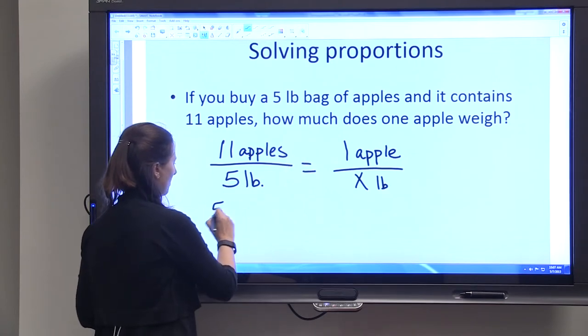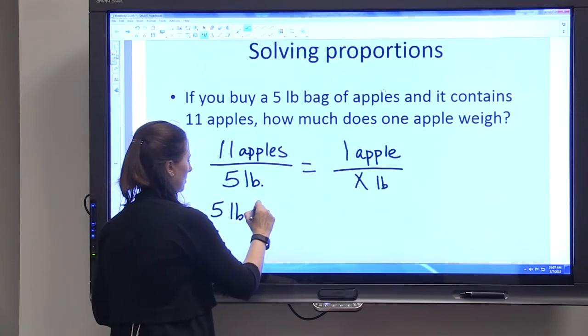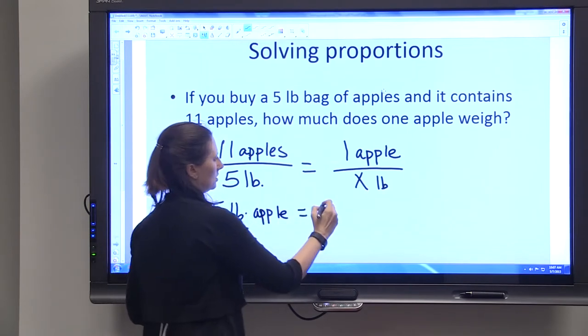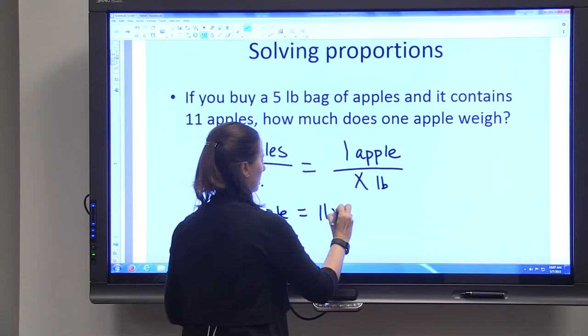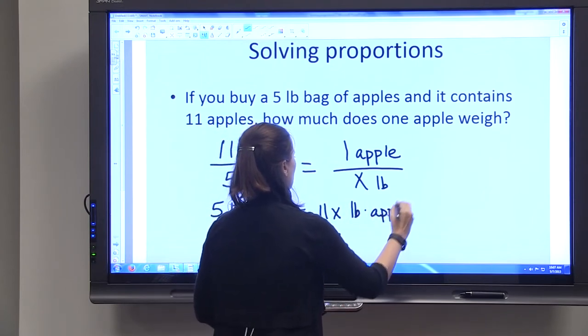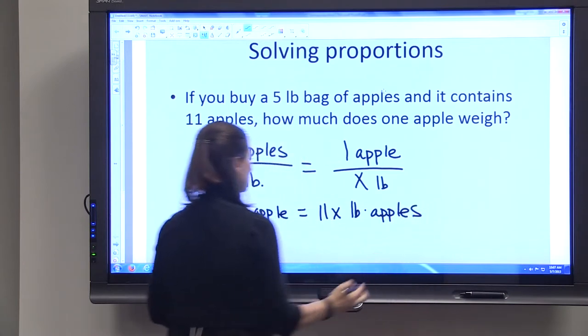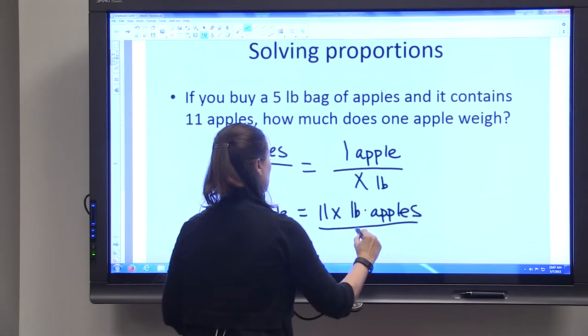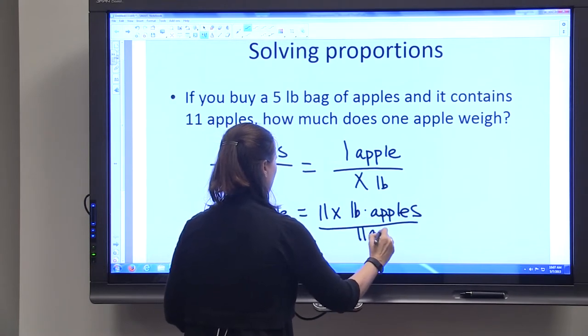So we have five pounds of apples equals 11x pounds of apples, and we're going to divide both sides by 11 apples so that we're left with the x pounds.